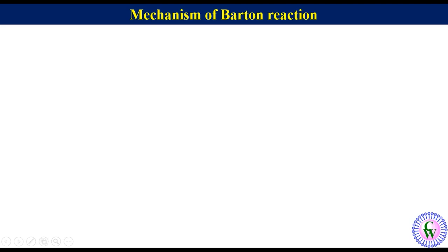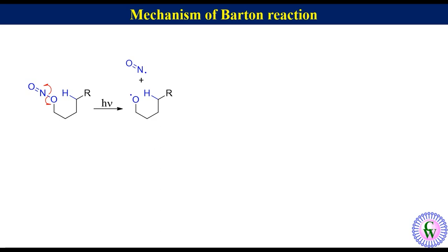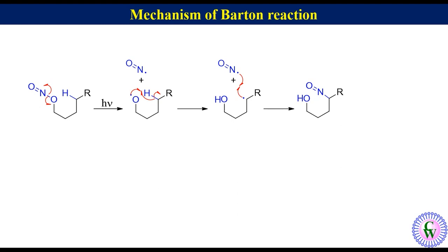Mechanism of Barton reaction: Alkyl nitrite under photochemical condition undergoes homolytic cleavage of the nitrogen-oxygen bond to produce an alkoxy radical and NO radical. The alkoxy radical after delta hydrogen abstraction produces an alcohol with a radical at the delta carbon. The two radicals then combine together to produce delta nitroso alcohol, which tautomerizes to the corresponding oxime.